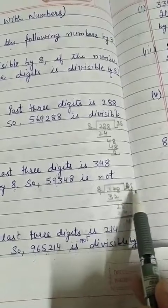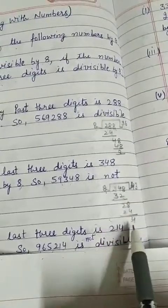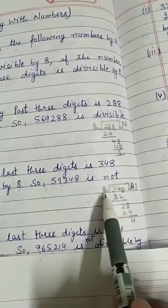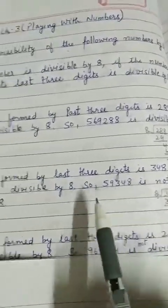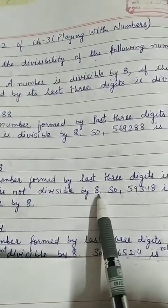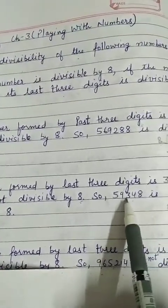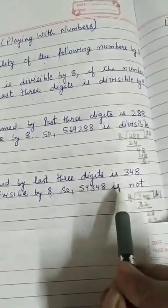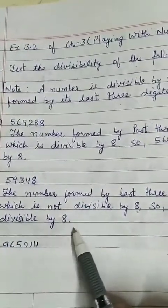It means 348 is not exactly divisible by 8, which is not divisible by 8. So, 59,348 is not divisible by 8.